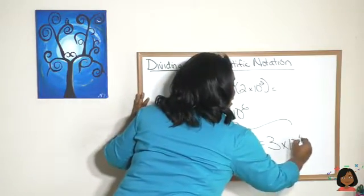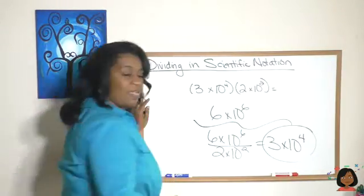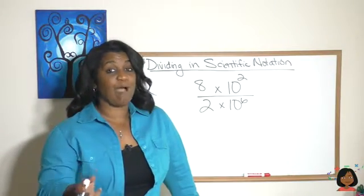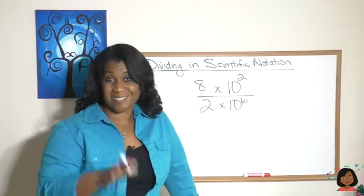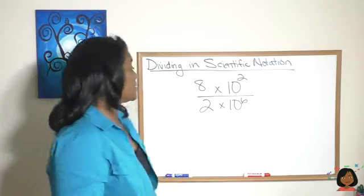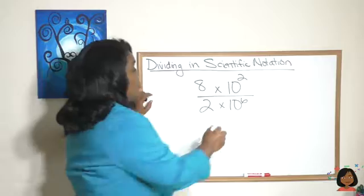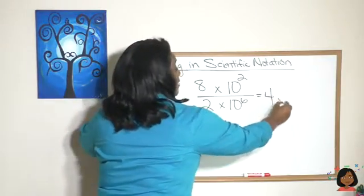What happens when you have a problem that looks like this? The good news is the process is still the same. We're going to subtract the exponents. First, we divide: 8 divided by 2 is 4. Then we put our power of 10: 2 subtract 6 is negative 4, so our exponent is negative 4.